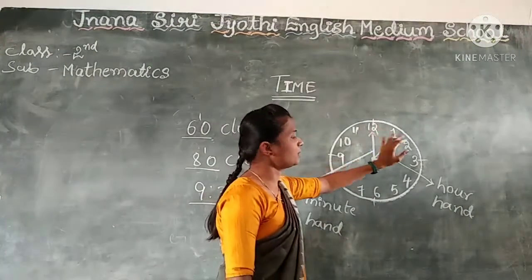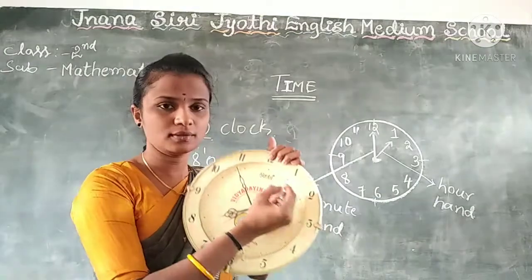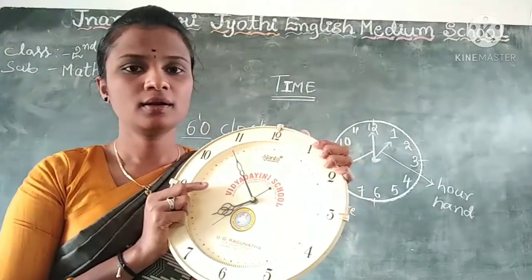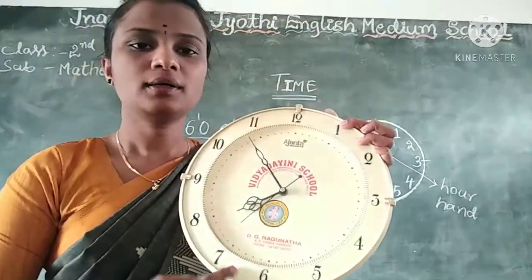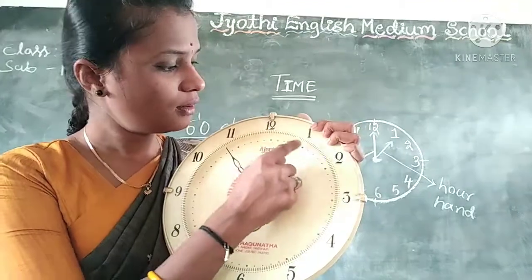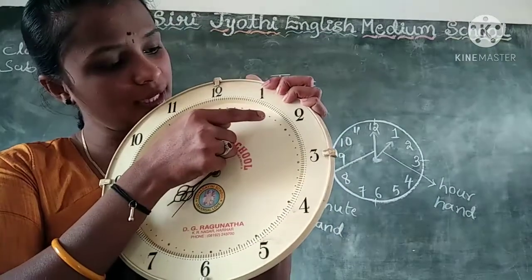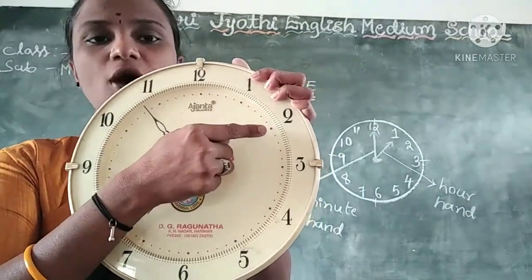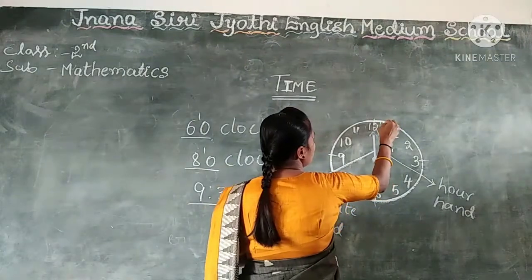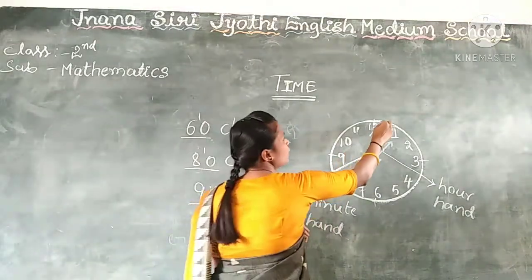Children, for every number there is a 5-minute gap. Between 12 and 1, for every number there is a 5-minute gap. See here, from 1 to 2 — how many dots are there? 1, 2, 3, 4, and then 5. Those 5 dots are called minutes. These are called minutes.